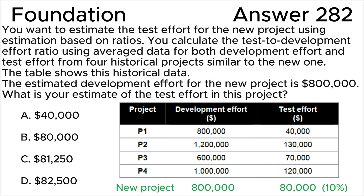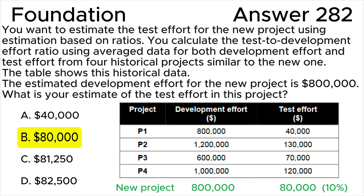This means that historically, on average, the test effort is ten percent of the development effort. So if the development effort is estimated to be eight hundred thousand dollars, the estimated test effort is ten percent multiplied by eight hundred thousand dollars, which equals eighty thousand dollars. The correct answer is B. Answers A, C, and D are wrong.